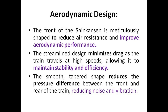Aerodynamic design — one of the most important properties to reduce drag and resistance. The front part of the bullet train is meticulously shaped to reduce air resistance and improve aerodynamic performance. The streamlined design minimizes drag as the train travels at high speed. The bullet train is almost 2x to 3x faster than a normal train, which is why you need to minimize drag to maintain stability and efficiency.